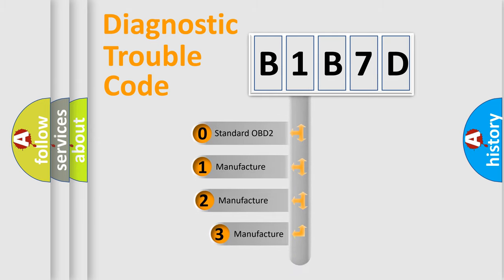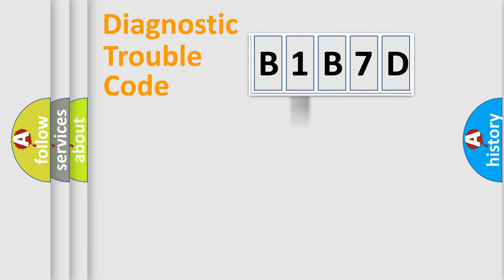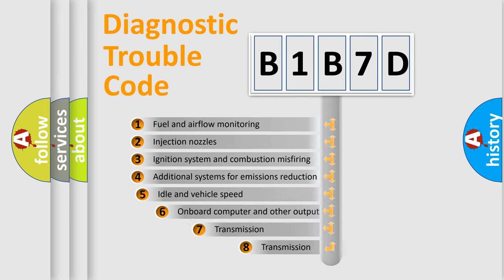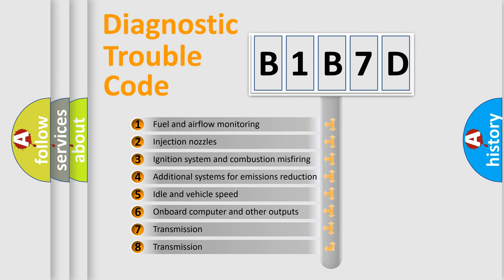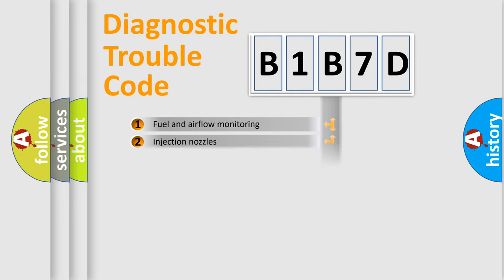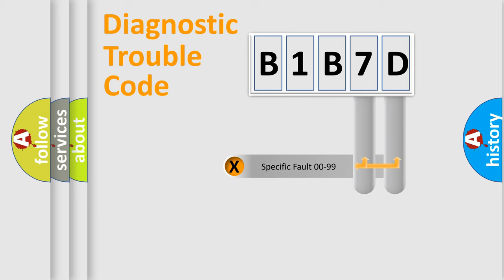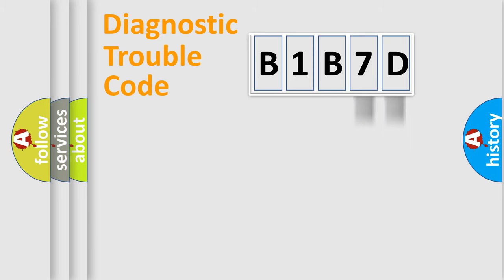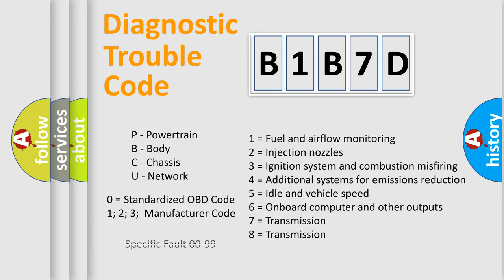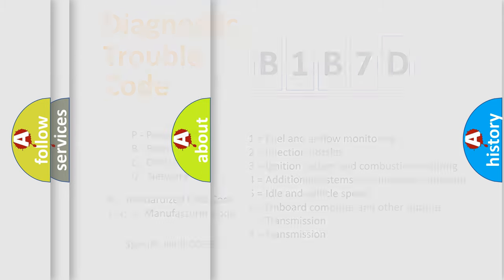If the second character is expressed as zero, it is a standardized error. In the case of numbers 1, 2, or 3, it is a more specific expression of a car-specific error. The third character specifies a subset of errors. The distribution shown is valid only for the standardized DTC code. Only the last two characters define the specific fault of the group. This division is valid only if the second character is expressed by the number zero.